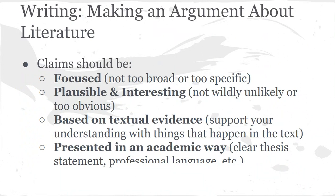When we're writing about literature, make sure that you are making arguable claims. This goes for your discussion board posts as well as when the time comes to write your essays. Claims should be focused — not too broad or too specific. They should be plausible, meaning they could actually happen, but also interesting, meaning they're not super obvious. Make sure your claims can be supported by textual evidence — whatever you think is happening in the text, you need to base that in something written so you can analyze it and say here's the evidence for why I think this means such and such. And make sure you're presenting your information in an academic way: use a clear thesis statement, use professional language, and that kind of thing.